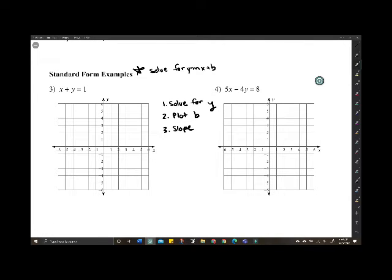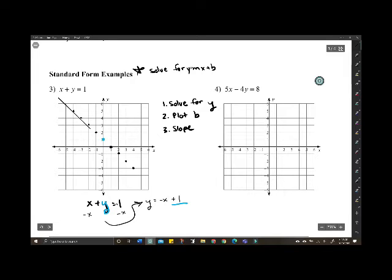For number three, x plus y equals one. We need to solve for y. You're always going to be adding or subtracting first. So, we subtract x. And then, we have y is equal to negative x plus one. Now, we have our b, which is one, on the y-axis. And, our slope is negative one over one. Down one and over one. And we connect the lines.